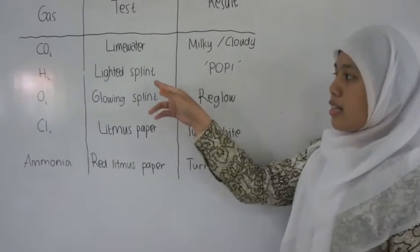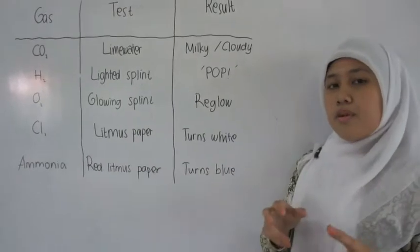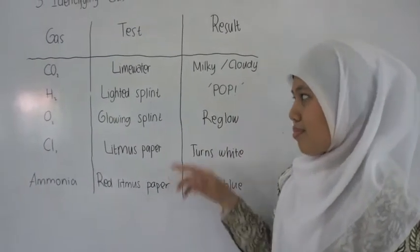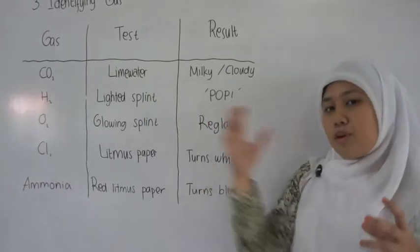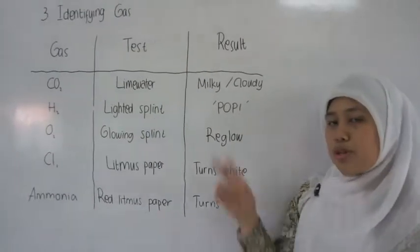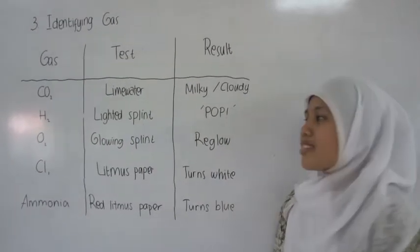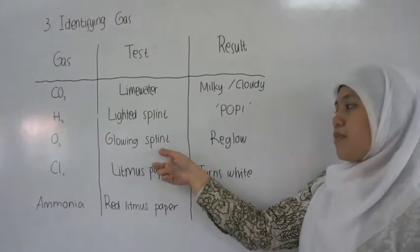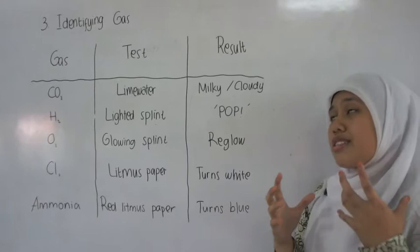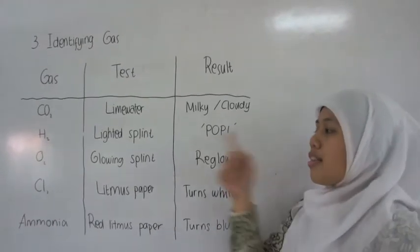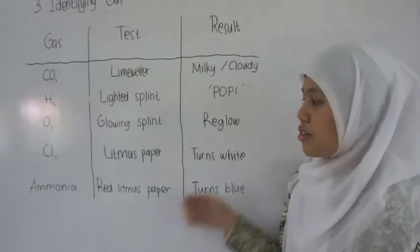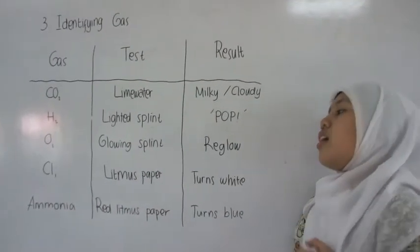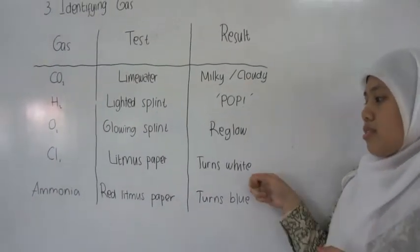And for hydrogen, you can test with a lighted splint, which will produce a squeaky pop when exposed to hydrogen. And for oxygen, you can test with a glowing splint, and the oxygen will re-light the splint. And for chlorine, you can test with litmus paper, and it will turn white.